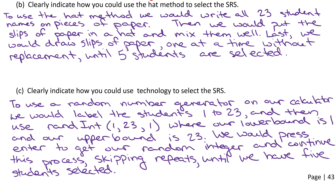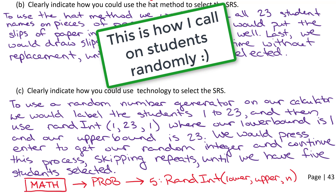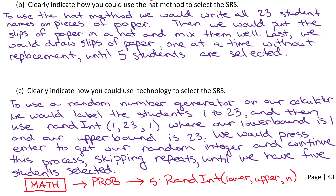For part C, to use technology, we would use our random number generator on our calculator. We would label the students 1 to 23, similar to how we did in part A with the random digit table, but then use randint — entering 1 as the lower bound, 23 as the upper bound, and 1 for n. Press enter to get random integers, skipping repeats, until you have five students selected. On the calculator, hit math, scroll over to prob, and pick number five, randint, then enter your lower, upper, and n value. We enter 1 for n because we want to generate one integer at a time — if you picked 5 at once and got a repeat, that sample wouldn't work. So we do one at a time to systematically skip a repeat if it occurs.